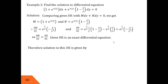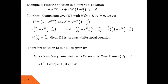We write the solution using the formula. ∫(1 + e^(x/y)) dx + 0 = c, since there are no terms in N free from x. Integrating: the integral of 1 w.r.t. x is x, and the integral of e^(x/y) w.r.t. x is y·e^(x/y). So the solution is x + y·e^(x/y) = c.